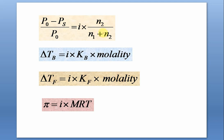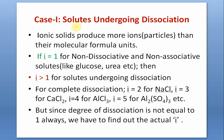In the mole fraction formula for relative lowering of vapor pressure, i × n₂ appears in the numerator and also in the denominator — because the number of moles of solute particles has changed to i times n₂, which must be added to n₁ (moles of solvent). So the complete modified expressions are: i × Kb × molality for boiling point elevation, i × Kf × molality for freezing point depression, and i × MRT for osmotic pressure.